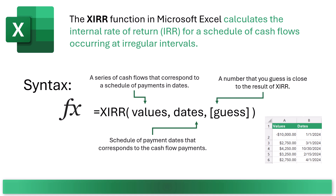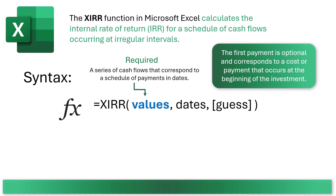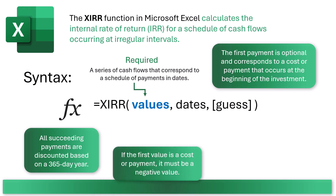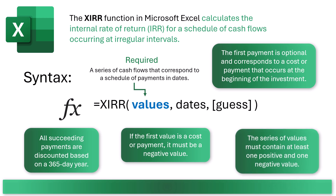The values argument is required — a series of cash flows that corresponds to a schedule of payments in dates. The first payment is optional and corresponds to a cost or payment that occurs at the beginning of the investment; it needs to be a negative value. Additional payments are discounted based on a 365-day year, and the series of values must contain at least one positive and one negative value.